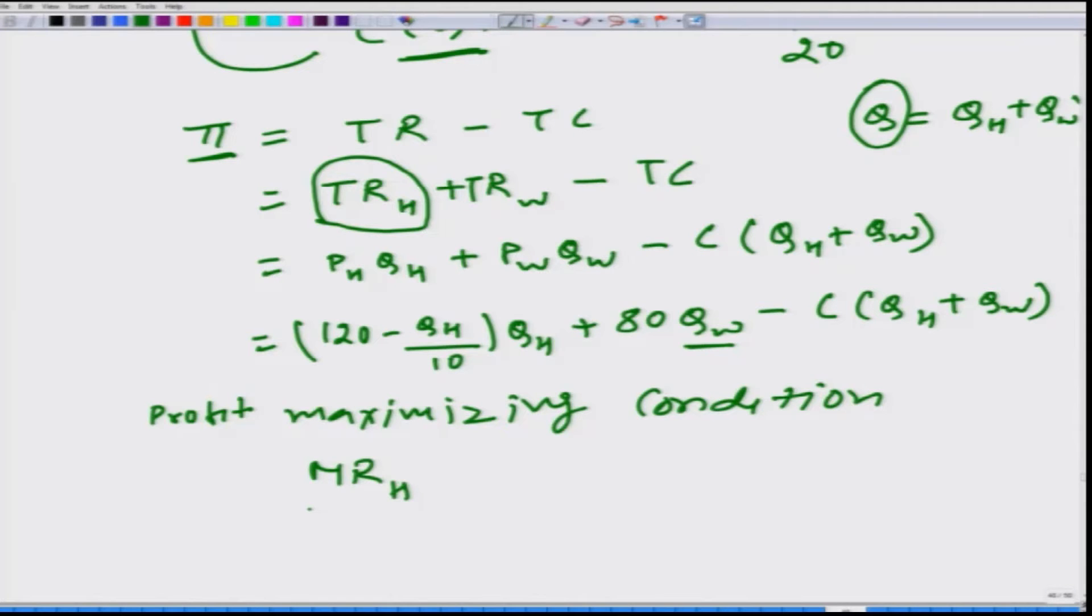What we get is, the profit maximizing condition is going to be marginal revenue in market H, because when we differentiate total revenue in market H with respect to H, what do we get? We get marginal revenue. It simply means that extra revenue that this firm gets when it produces one more unit. And this does not depend on QH, so when we differentiate this term with respect to QH, we get 0.